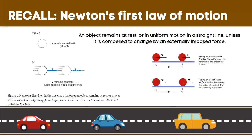Let us recall Newton's first law of motion. Newton's first law, sometimes referred to as the law of inertia, predicts the behavior of objects for which all existing forces are balanced. It states that if the forces acting upon an object are balanced, then the acceleration of the object will be zero. Objects at equilibrium will not accelerate. An object will only accelerate if there is a net or unbalanced force acting upon it, which can change its speed, its direction, or both.